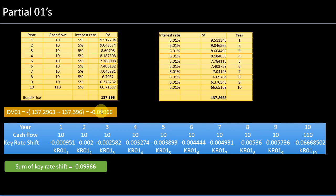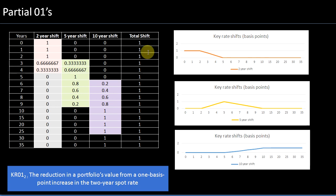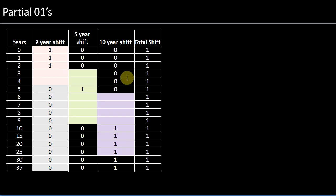The reason the sum of key rate exposures equals the DV01 is the principle we established: the key rates are set up such that the sum of the key rate shifts for each tenor equals one basis point. This is a fundamental principle to remember when setting up key rates.